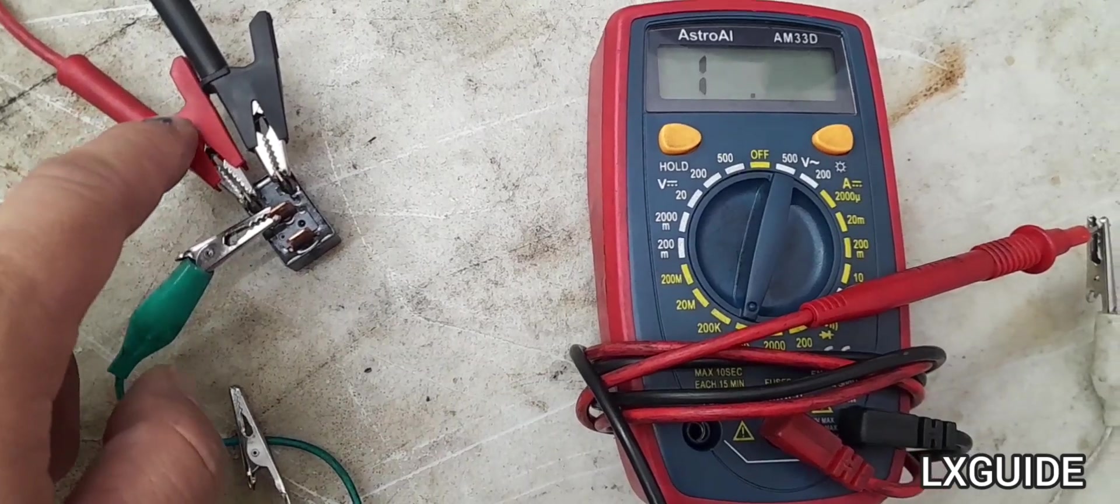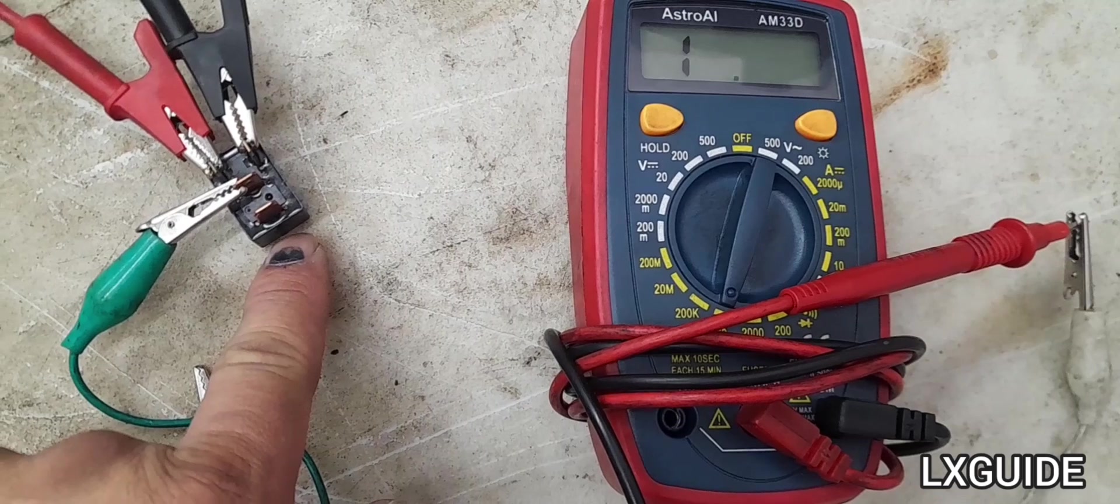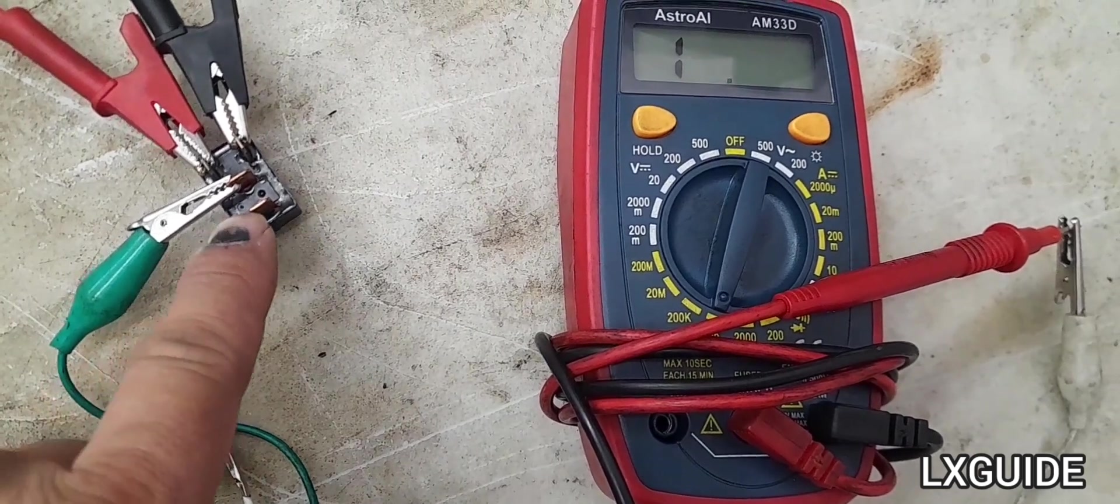So we identified pin 86 and 85, that means the relay coil is energized.